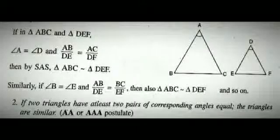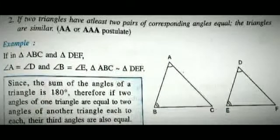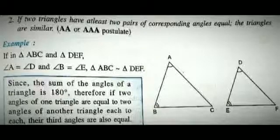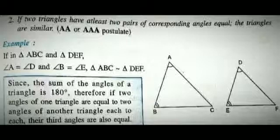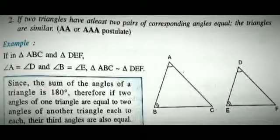Next is the AAA axiom. If two triangles have any two corresponding angles equal, then you can say the triangle is similar. Because the sum of the three angles of a triangle is 180 degrees, the third angle will also be equal. Therefore, by AA or AAA axiom, the triangles will be similar.